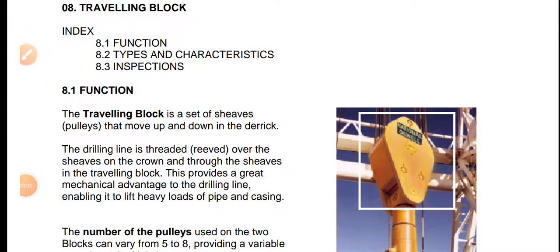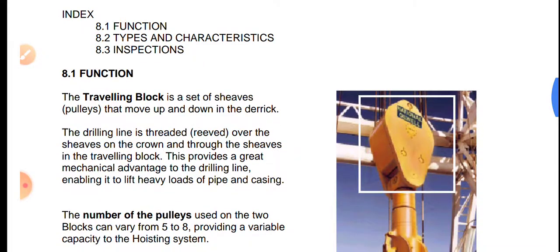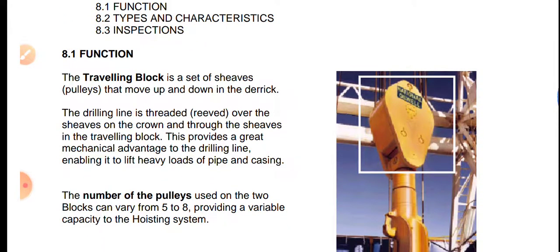Hello viewers, today we will discuss the traveling block — what it is, its functions, types, characteristics, and inspections. The traveling block is a set of sheaves, which are like pulleys, that are in-built into that block.